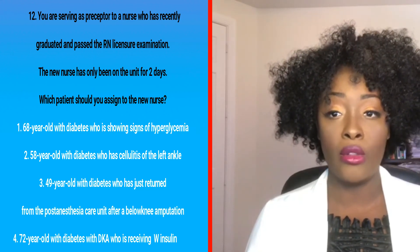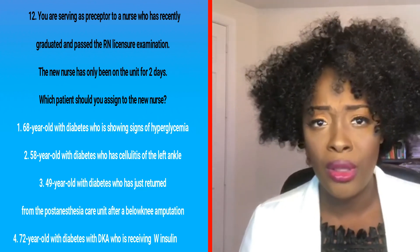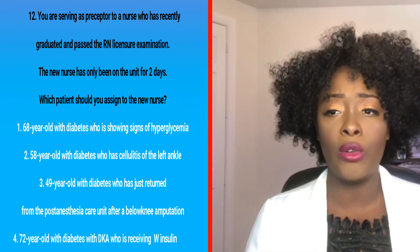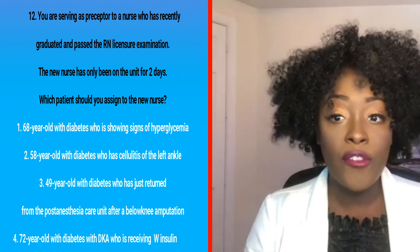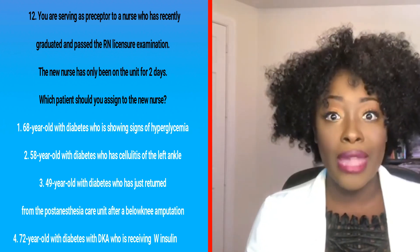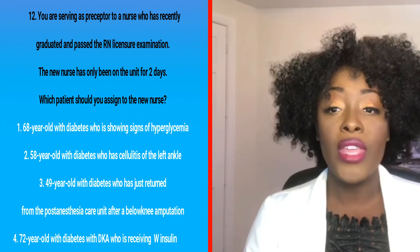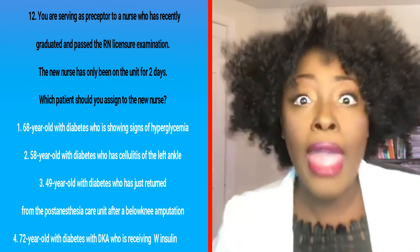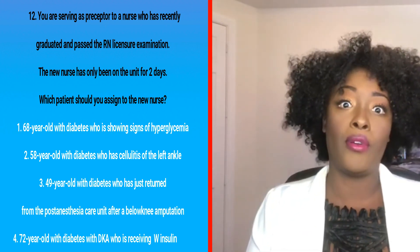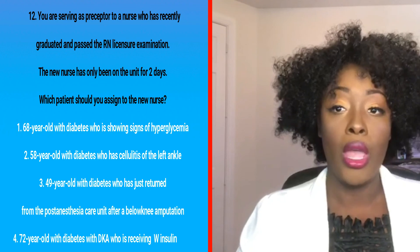Let's look at why the other choices are wrong. Choice one, the 68-year-old showing signs of hyperglycemia — that patient is not stable. Choice three, the 49-year-old who just returned from PACU — that's a post-op patient requiring in-depth assessment; not stable. Choice four, the 72-year-old with DKA receiving IV insulin — that is a medical emergency, definitely not a stable patient. So the most stable patient in this clinical picture is clearly number two.